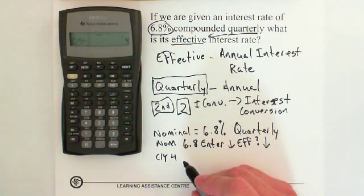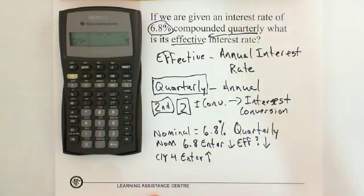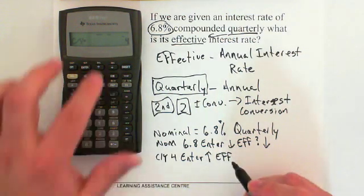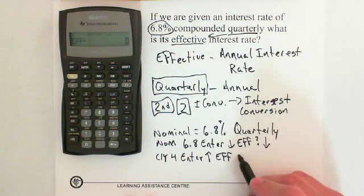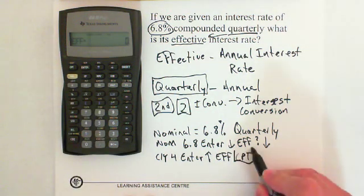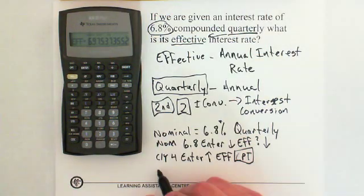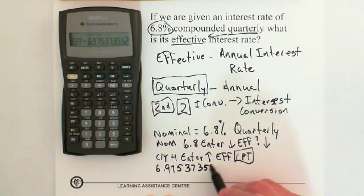We type in 4 and then Enter. Then we push the up arrow back to EFF. Remember, this is what we're solving for, so we go ahead and hit Compute. And here's our answer: 6.975373552.